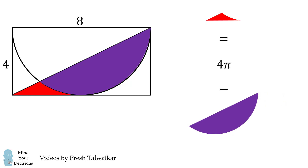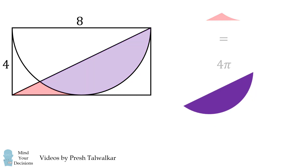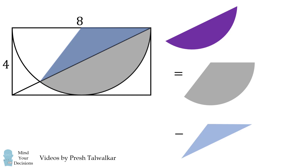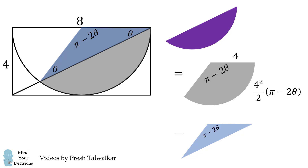All that remains is to solve for the area of this circular segment. This is the most complicated part of the problem. This area will be equal to the area of this circular sector minus the area of this isosceles triangle. In order to solve for each of these shapes, we're going to need to know the central angle. So let's label this angle as theta. This angle will also be equal to theta because this is an isosceles triangle. Notice the sides opposite these angles are each radii of this circular sector. So the central angle of this circular sector is equal to π minus 2θ. The area of the circular sector will be 4 squared over 2 multiplied by this central angle. The area of the isosceles triangle can be solved using 4 squared over 2 multiplied by the sine of the angle in between.